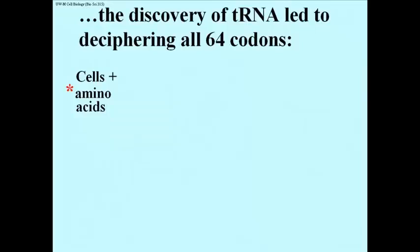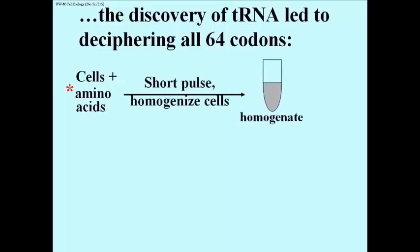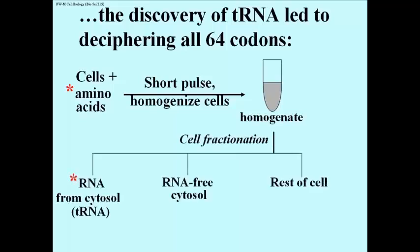Marshall Nirenberg hit upon a method to decipher all 64 codons in record time. It turned out, if you took cells and added radioactive amino acids to the cells, and waited a very short time, and then homogenized the cells so you end up with a homogenate,